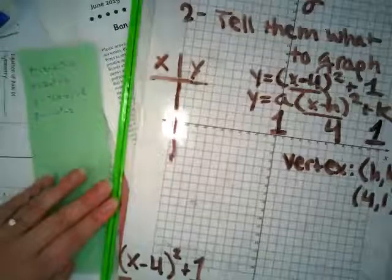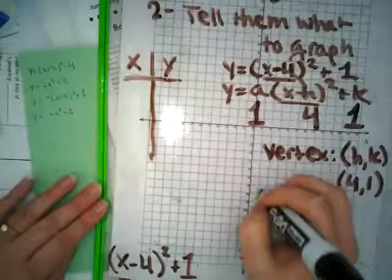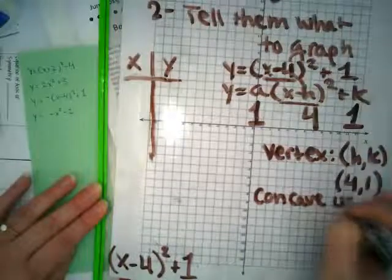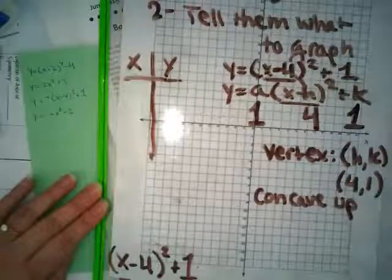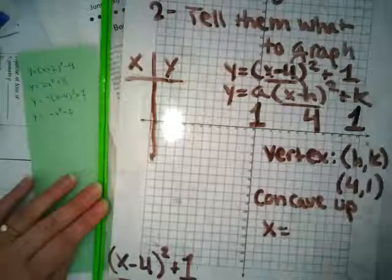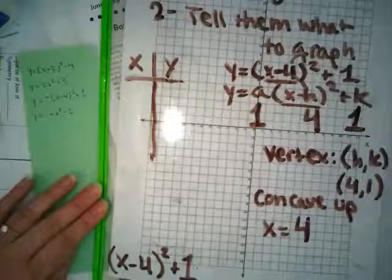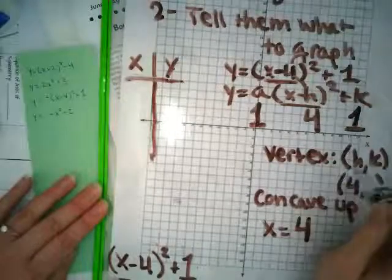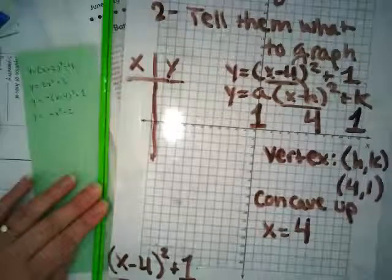Is my equation concave up or concave down? Up. It's concave up. And where's my axis of symmetry on this one? I heard it as a whisper. x equals 4. So your axis of symmetry is always the x value of your vertex. That's where your axis of symmetry occurs.